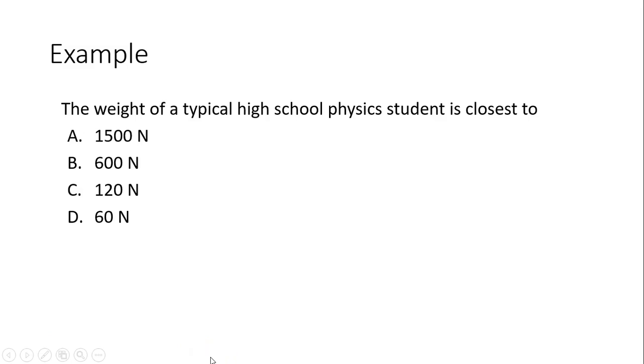With that in mind, let's do some estimation about weight. The weight of a typical high school student is closest to how many Newtons? You probably all know your weight in estimation. Say someone is weighing 130 pounds. 130 pounds, that's about 650 Newtons. How did I get that? You use 130 times five because one pound is five Newtons, right? So that's closest to 600 Newtons.